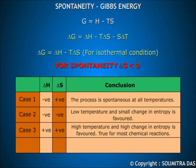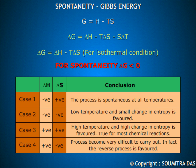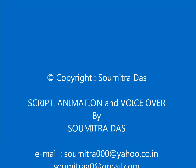High temperature and high entropy change is favoured, which is why high temperature is favourable for most chemical reactions. Case four: delta H is positive and delta S is negative. Such processes become very difficult to carry out.